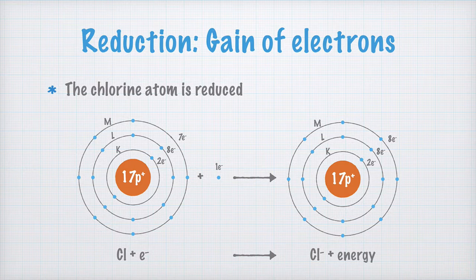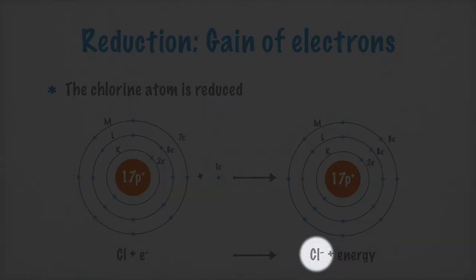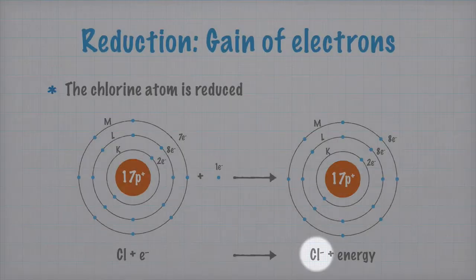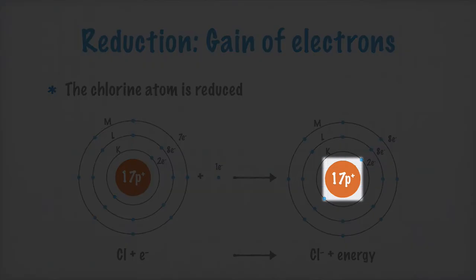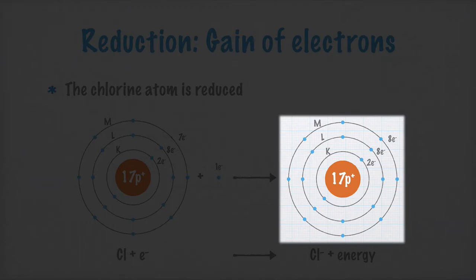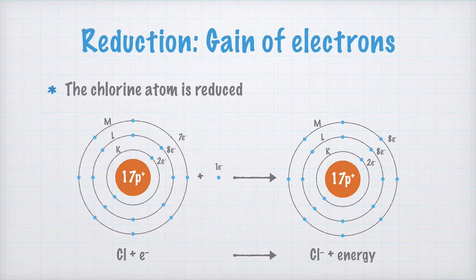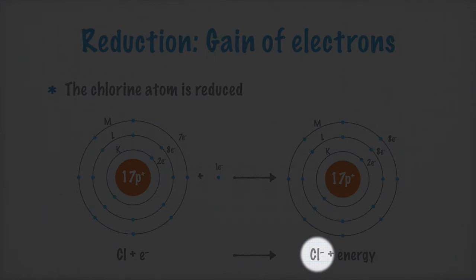The amount of energy released when the chlorine atom absorbs an electron is much greater than the energy needed to remove an electron from the sodium atom. That is why, throughout the reaction, so much energy is released. The chloride ion is negatively charged because it still has 17 protons in the nucleus, but since it picked up a negatively charged electron, it now has 18 electrons, giving the chloride ion a charge of Cl-.